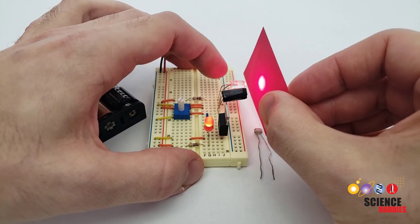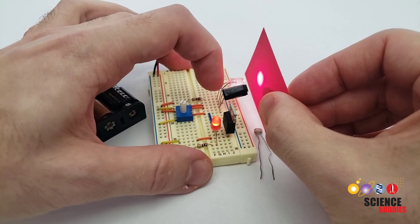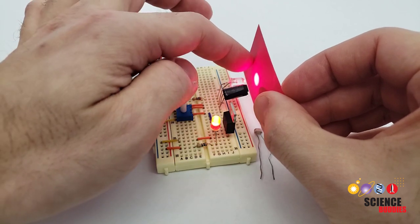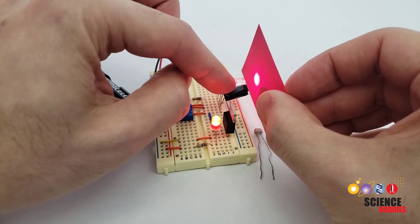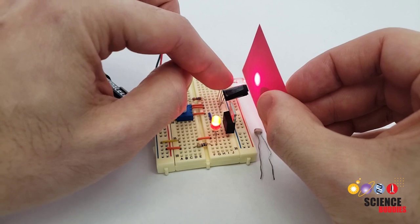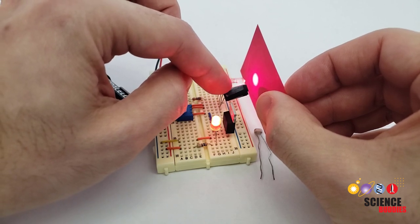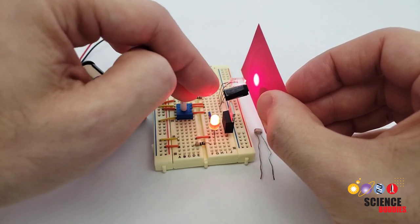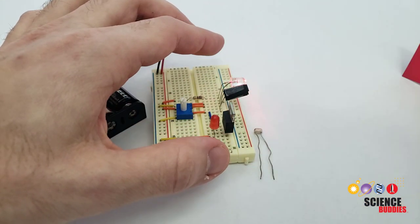So if I hold a red piece of paper in front of the LED and the photoresistor, a lot of that red light is going to be reflected. It's going to hit the photoresistor, and the photoresistor's resistance will go down, and the rest of the circuit that we'll talk about later is going to light the LED up.